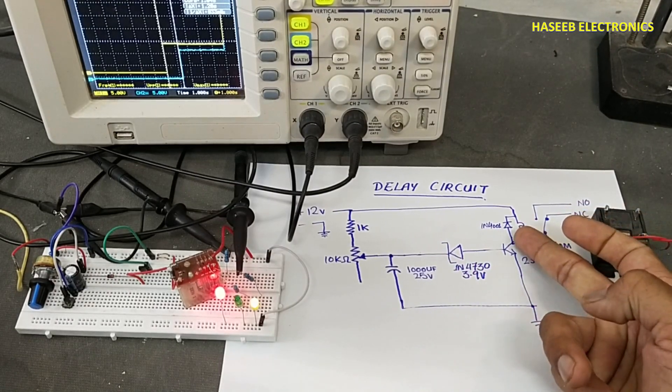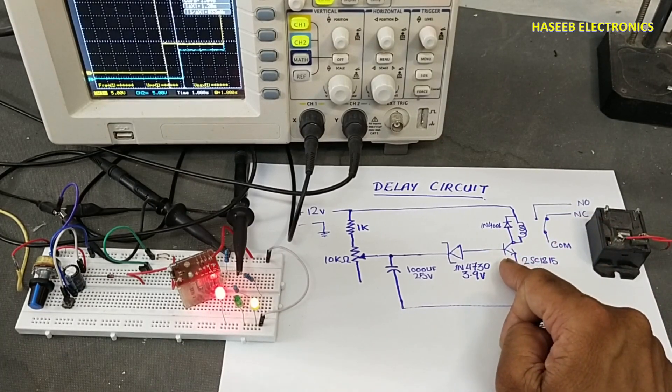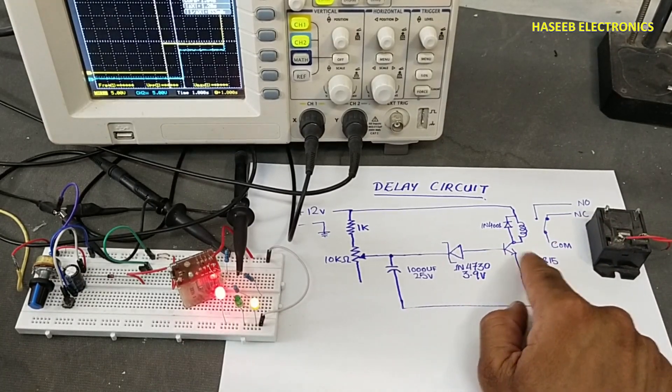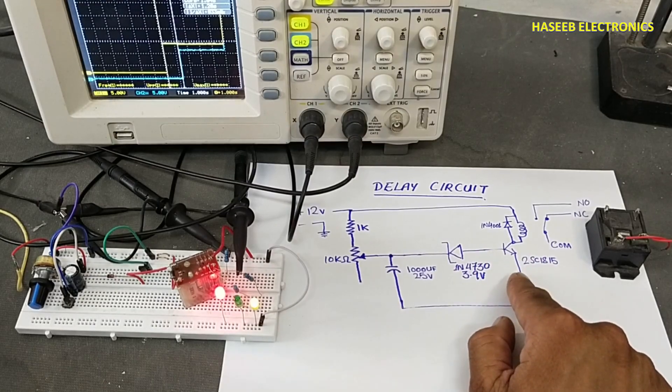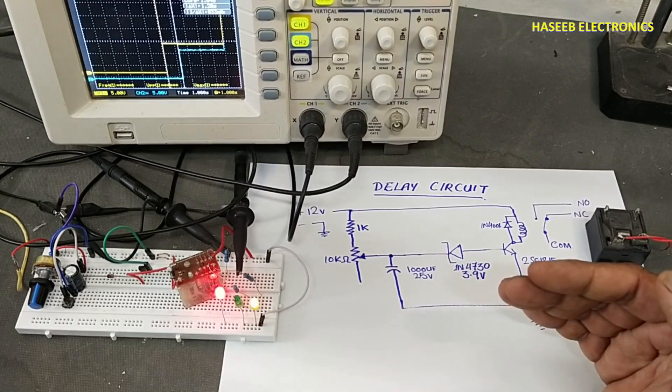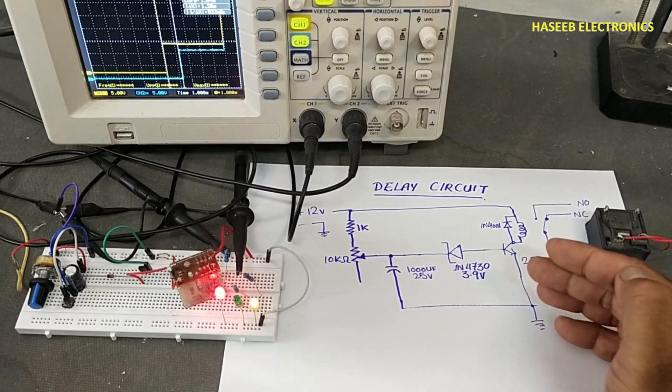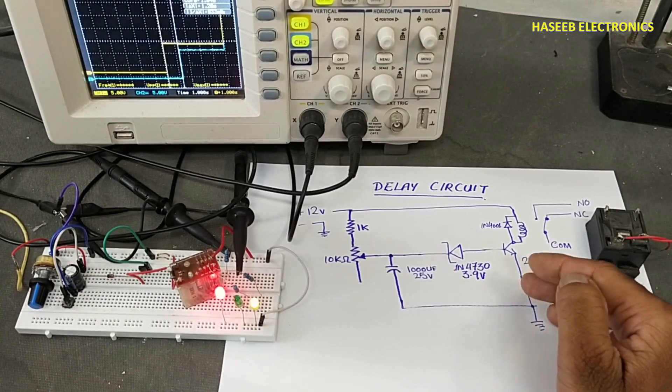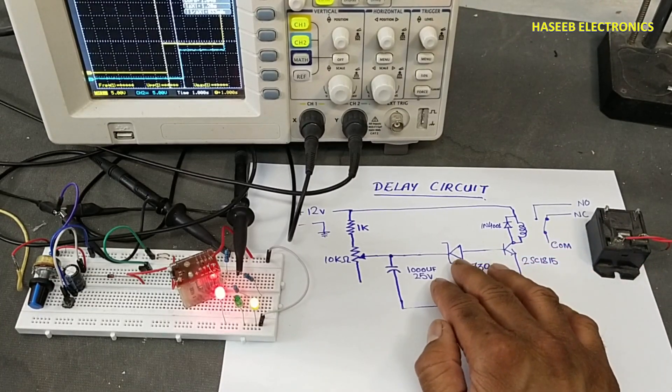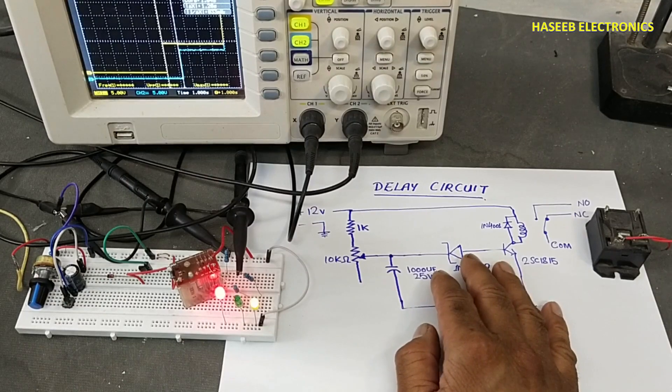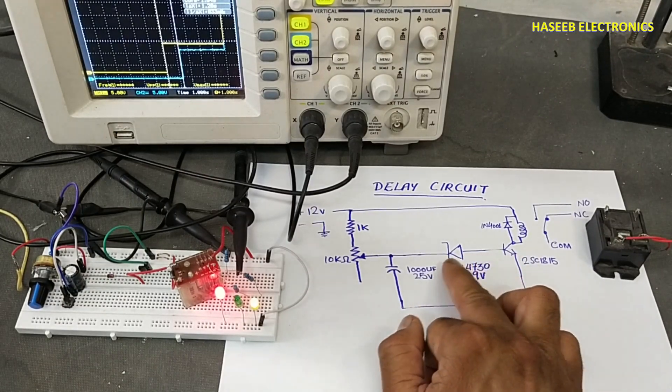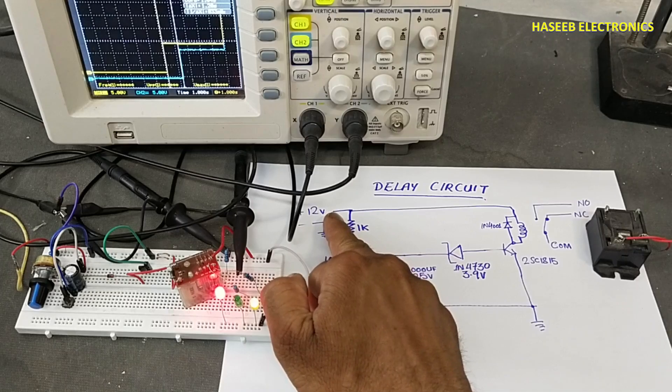On this current rating we will consider the gain of this transistor. At that time we will consider the maximum base current and we will remain in safe limit. If saturation base current is 10 milliamps here, we will consider maximum base current 7 or 8 milliamps.